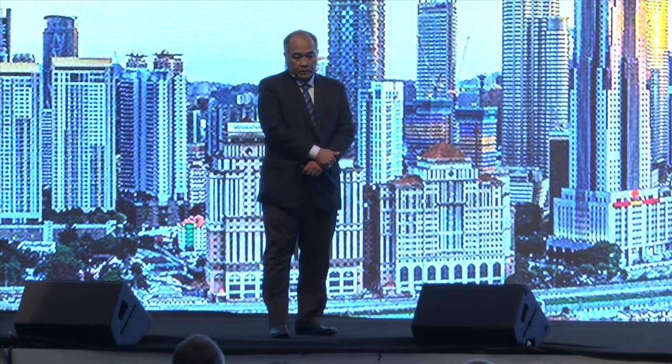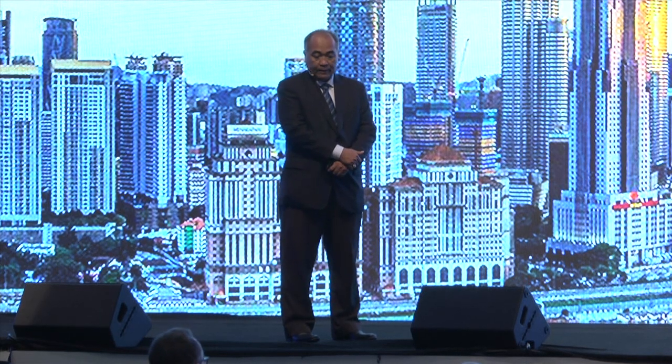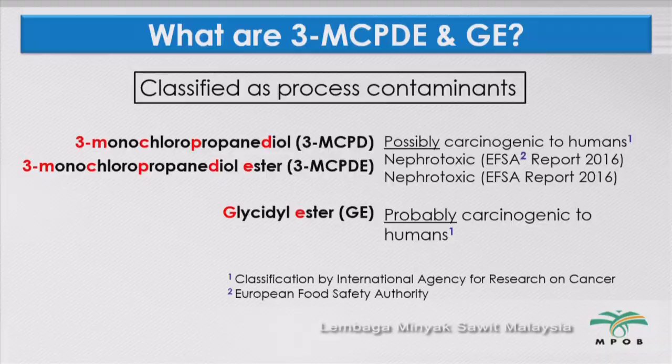What are 3MCPD and GE? The E is esters. 3MCPD is monochloropropanediol — very mouthful — and 3MCPD ester is 3-monochloropropanediol ester. The glycidyl ester is GE. 3MCPD is possibly carcinogenic to humans and nephrotoxic, as reported by EFSA, and GE is also probably carcinogenic to humans. That is why this is so important to vegetable oils, not only palm oil.